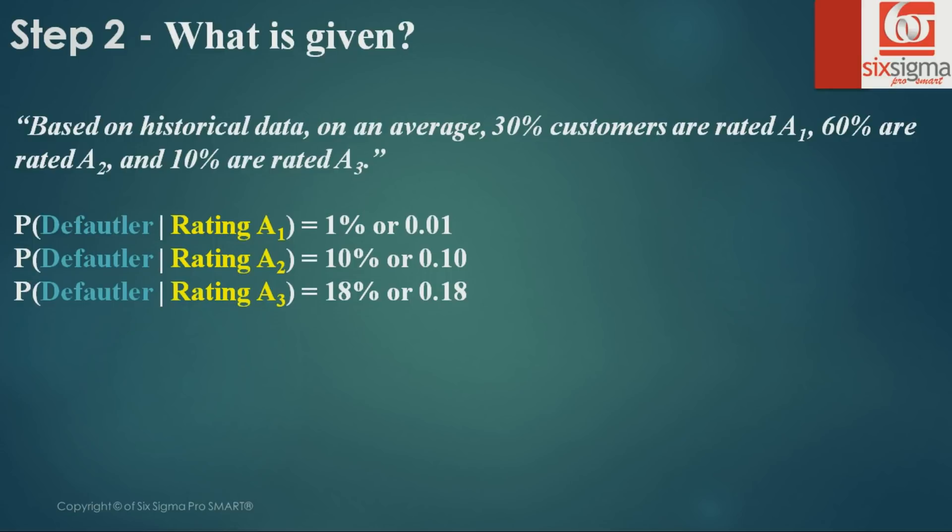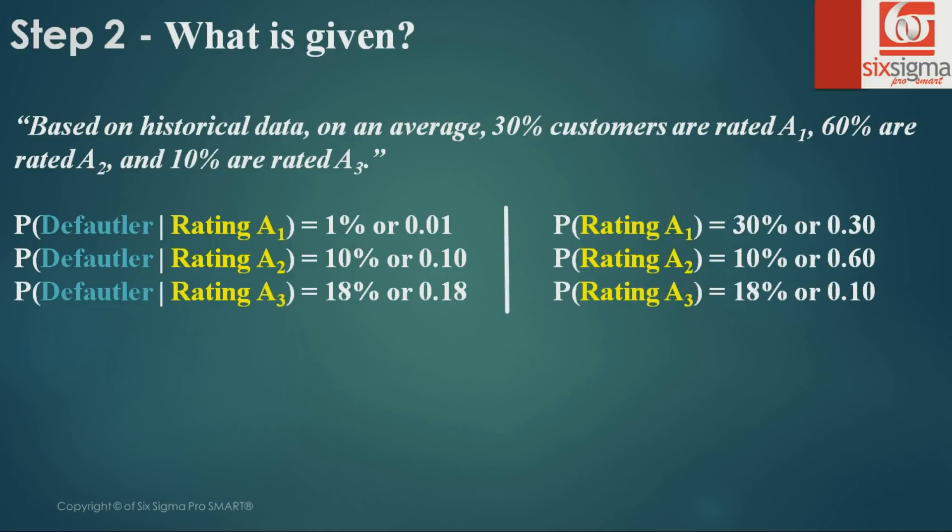Based on historical data, on average, 30% of customers were rated A1, 60% were rated A2, and 10% were rated A3. These are the simplest probabilities - prior probabilities, normal probabilities. Notice that when you add these prior probabilities, they make up the complete sample space, which equals 1.